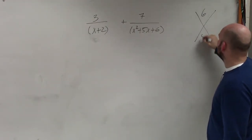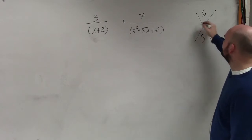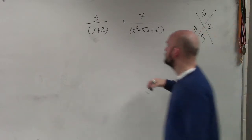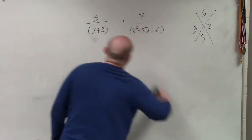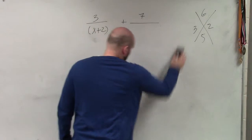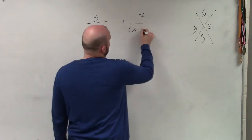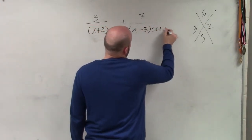I see that's 6 and 5. What two numbers multiplied give you 6 and added give you 5? That's 3 and 2. So therefore, I can rewrite this as (x + 3)(x + 2).